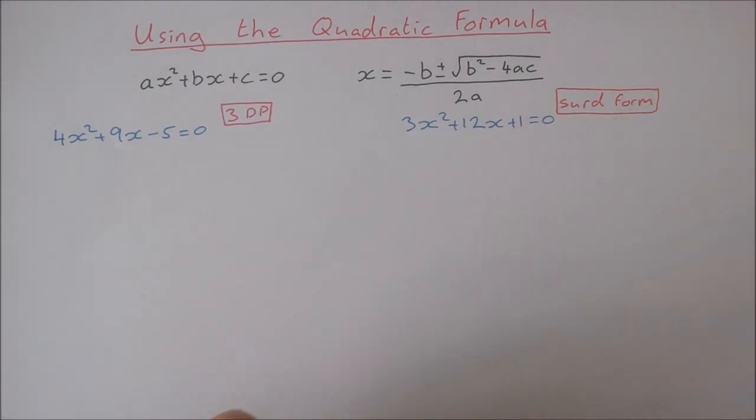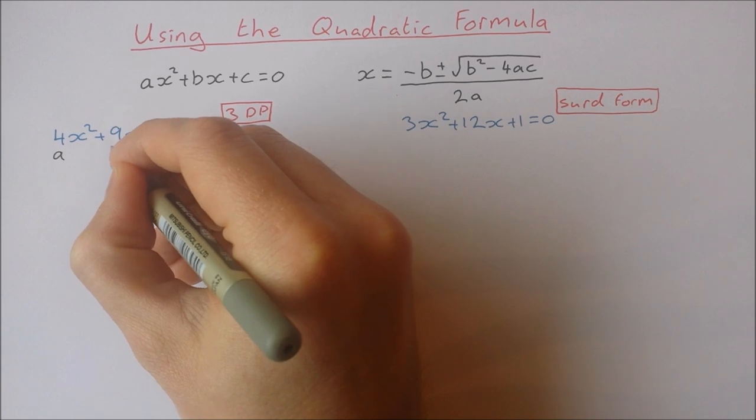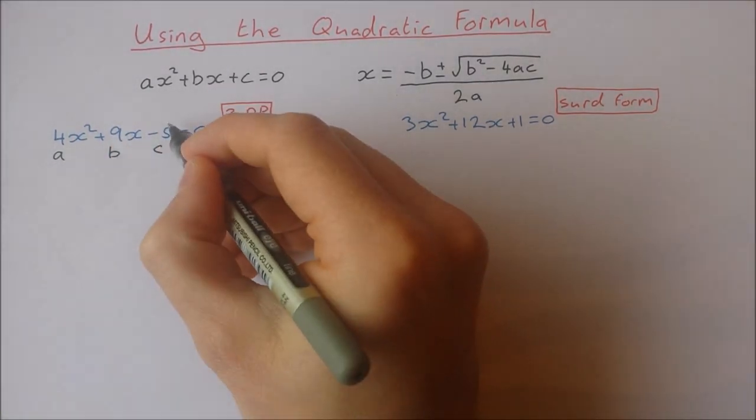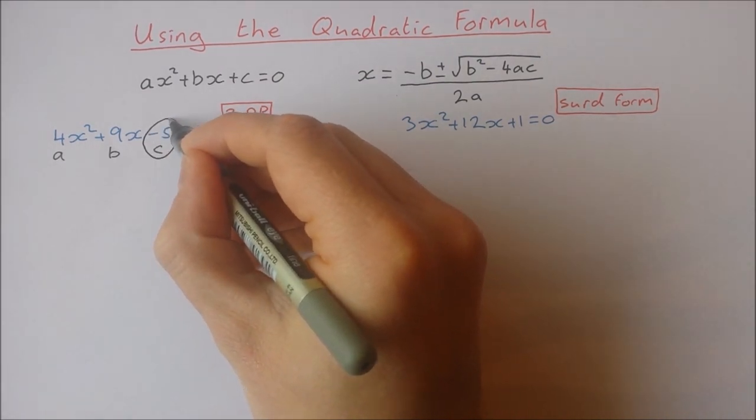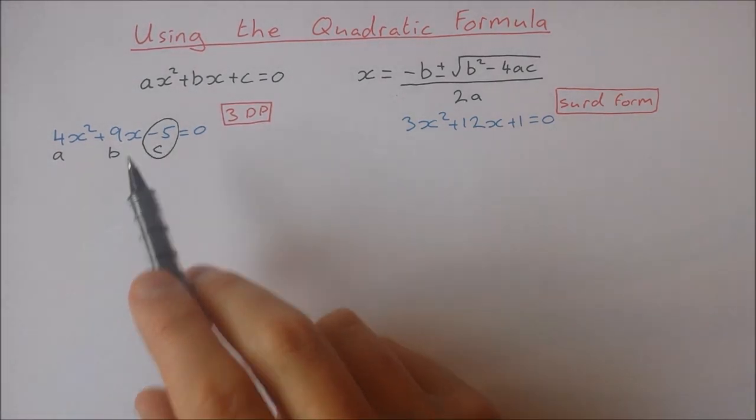So in the first one let's just label what a, b and c are. So a is 4, b is 9 and c is minus 5. Now just be careful that c is actually minus 5 and not 5 because it's quite common to make a mistake here and forget to put in your negative sign.